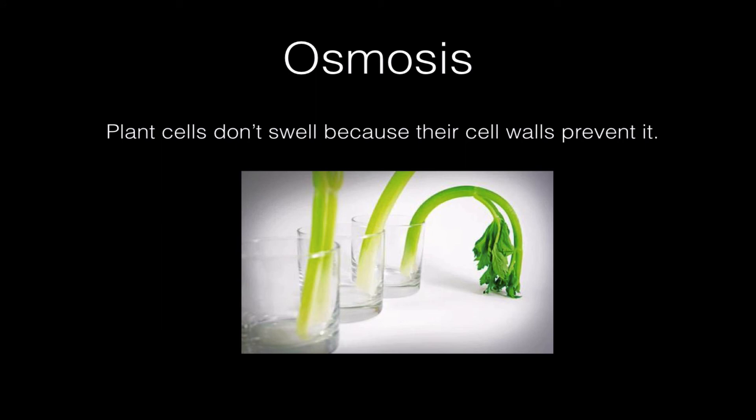How do plant cells respond to osmotic pressures? Plant cells don't swell and burst because they have cell walls that prevent this. So if you place some plant cells like celery in a hypotonic environment, like plain water, the cells are going to be nice and rigid and plump and filled up with water. Their vacuoles are going to take in water, their cytoplasm is going to take in water, and they're going to press against the cell walls, and we're going to get lots and lots of turgor pressure.